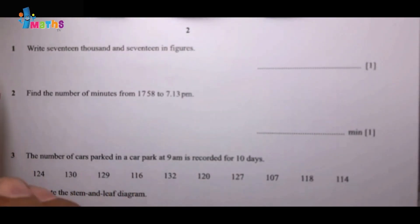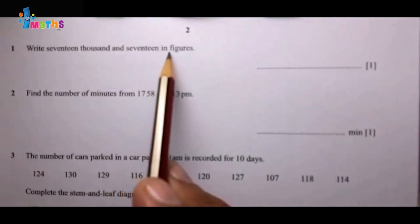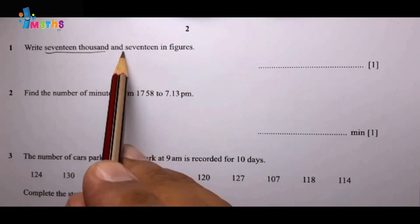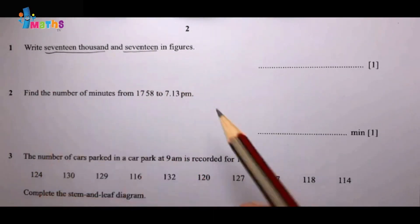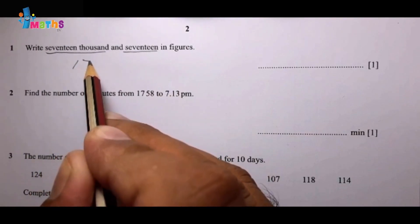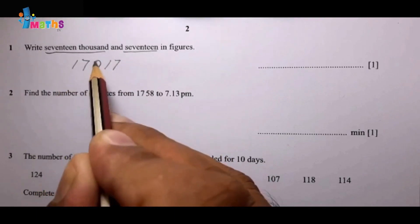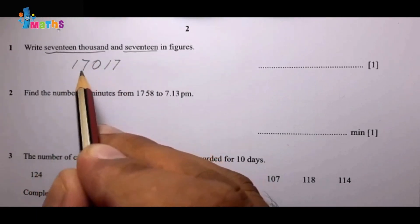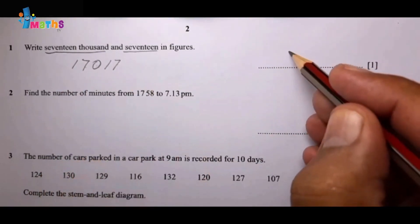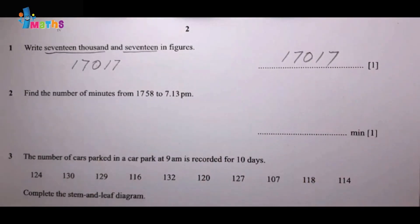Question number one: write seventeen thousand and seventeen in figures. Seventeen thousand and seventeen — the important thing is that in between there should be a zero, otherwise it will be wrong. So the answer will be one seven zero one seven. We write the answer like this: 17017. This will be the proper answer.